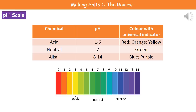Acids, if you remember, are pH 1 to 6, and if we add universal indicator the colours are reds, oranges, and yellows. Our neutral is pH 7 and that's got that green colour. And then our alkali is pH 8 to 14 and it's got the blues and the purples.